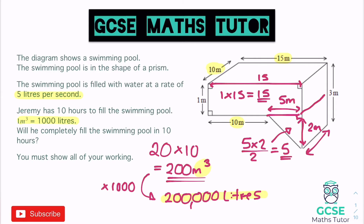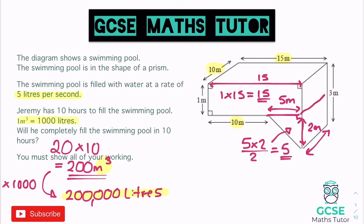We can now figure out how long it's actually going to take to fill. It takes 5 litres per second and we have 200,000 litres to fill. To find how many seconds that takes, we divide 200,000 by 5. 5 goes into 20 four times, then carry the zeros — that gives us 40,000. So the pool is going to take 40,000 seconds to fill.